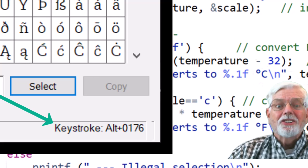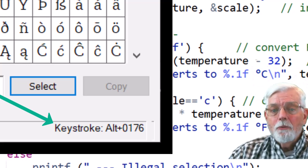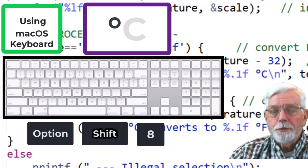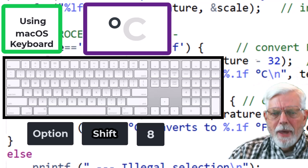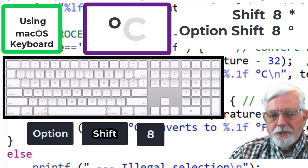Wow! Check out the lower right corner of the character map. It gives the key code for the degree symbol. It is Alt plus 0176. If you are using a Mac, use Option Shift 8. The easy way to remember this is that the Shift 8 is the asterisk. Option Shift 8 is the degree symbol. It looks like a circle instead of a star.